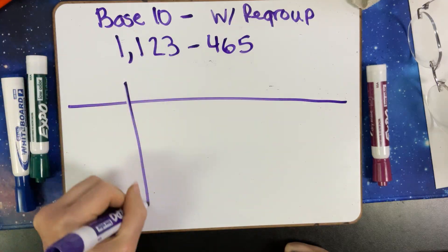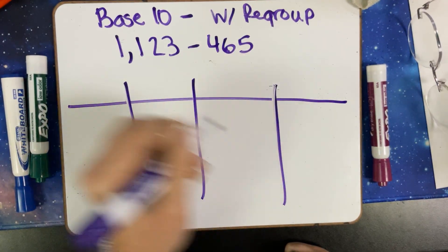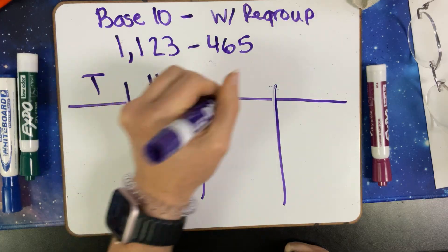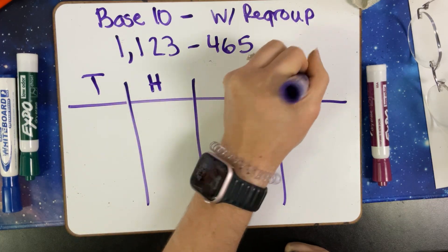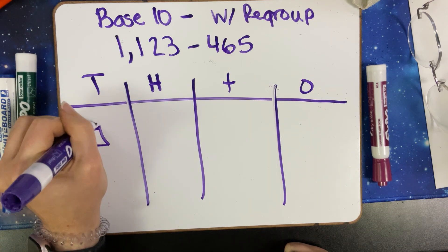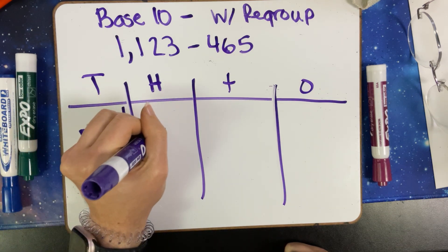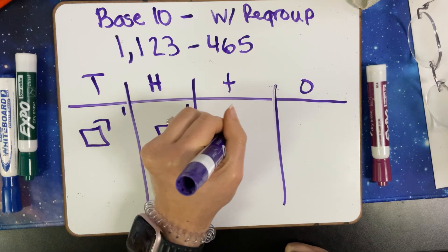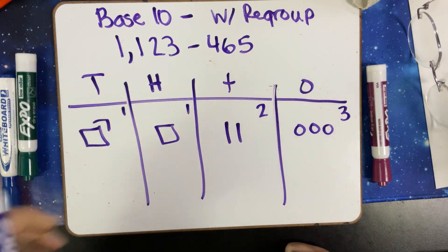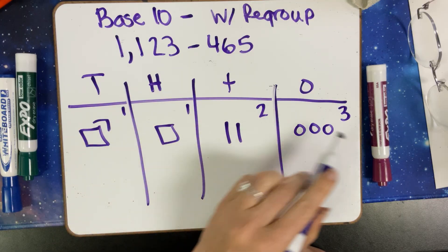My first step is I'm going to draw that out. We're going to have a THTO: thousands, hundreds, tens, ones. We're going to draw it out - 1,123.